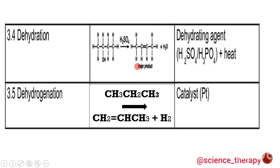The fourth type of elimination is dehydration — from the name, we are extracting water. We take this alcohol, remove the OH from one carbon and the hydrogen atom from the adjacent carbon. The OH and H react to give the byproduct water. Between the two carbon atoms a double bond forms, giving the major product according to Markovnikov's rule. The reaction conditions are a dehydrating agent — sulfuric acid or phosphoric acid — and heat.